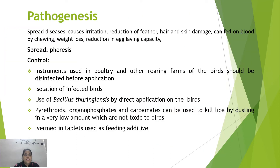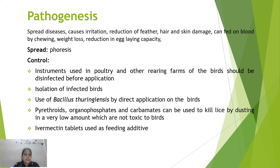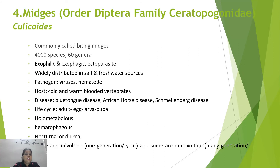Regarding pathogenesis, chewing lice do not spread a specific disease but cause irritation, reduction of feathers and hair, and skin damage. They can feed on blood by chewing feathers, causing weight loss and reduction in egg-laying capacity of domestic and wild animals. They spread between hosts via phoresis. Control includes use of disinfected instruments when handling poultry, isolation of infected birds, direct application of Bacillus thuringiensis, use of pyrethroids, organophosphates, or carbamates in low non-toxic amounts, and ivermectin tablets added to their feed.